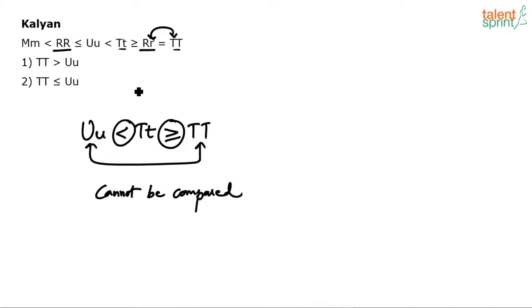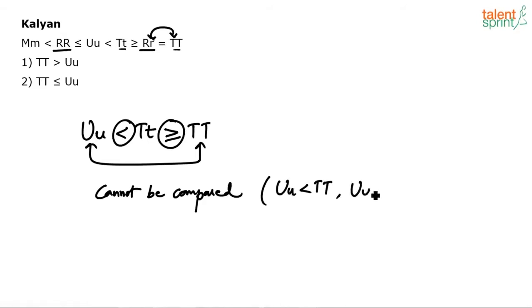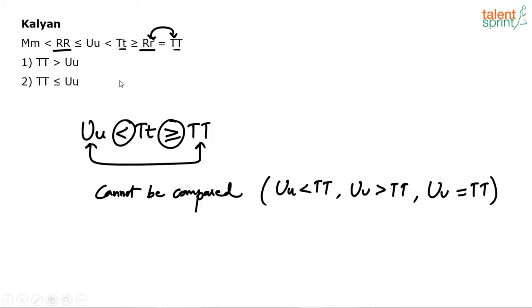The answer should be 'cannot be compared' — we have no definite answer to this one. U can be greater than T, U can be less than T, or U can be equal to T. Now the first conclusion says T is greater than U. How is T greater than U? T can be greater than U, but it can also be less than or equal to. So the first one is wrong.